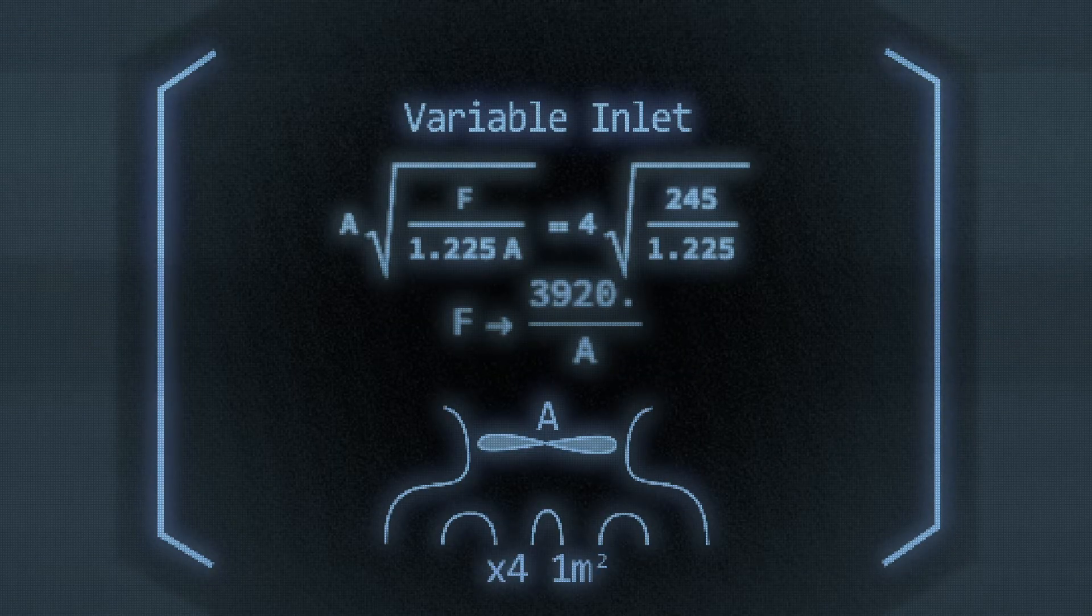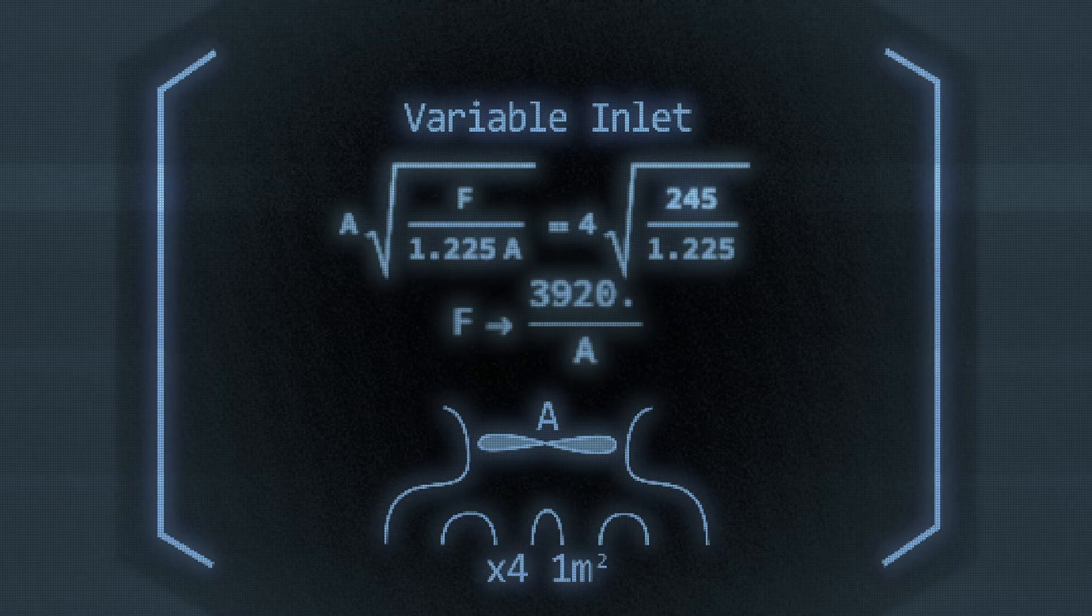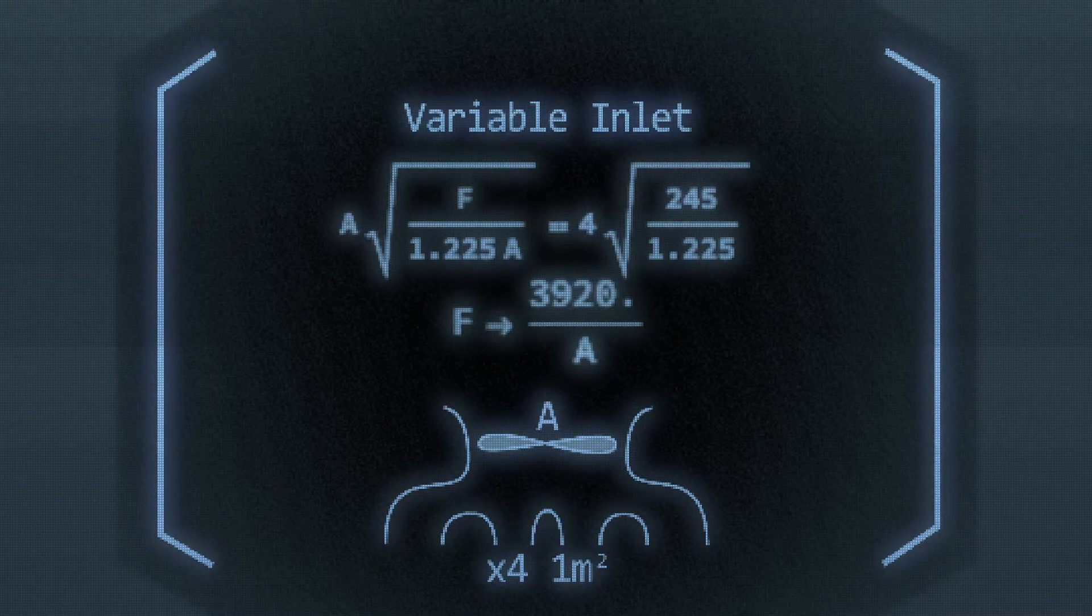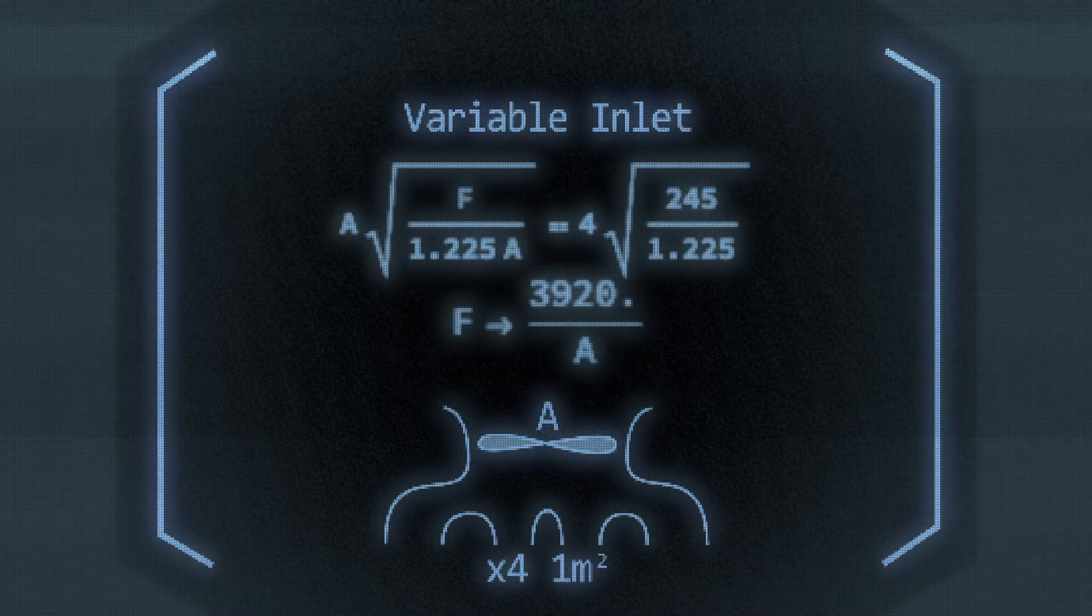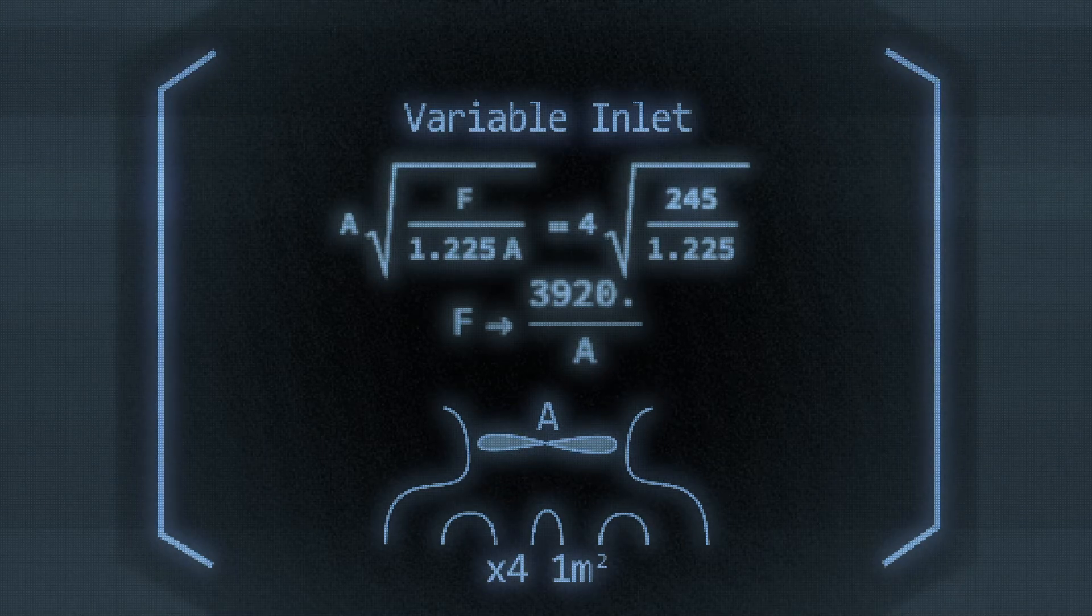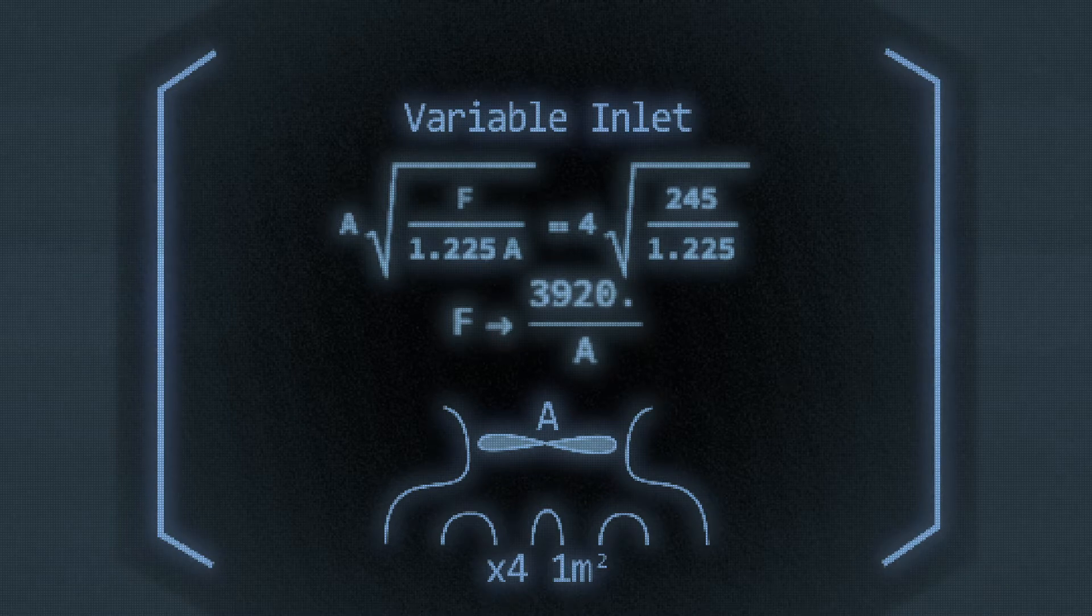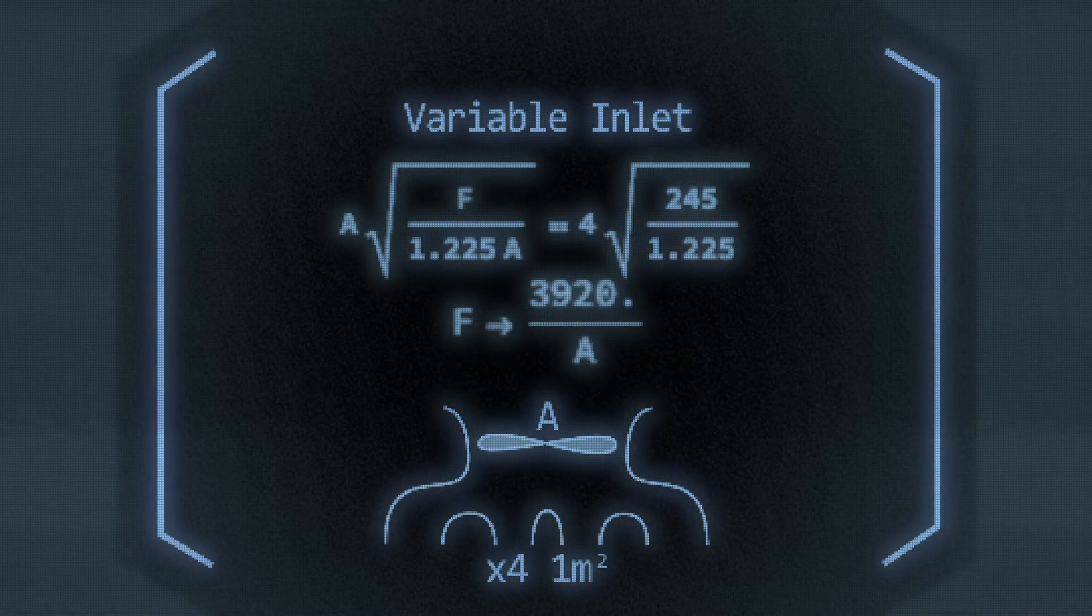For our minimum thrust of 980 newtons or 245 newtons for each corner, I set up this equation which can be simplified to F equals 3920 over the inlet area. This stems from the outlets being one square meter and the inlet being some variable area.